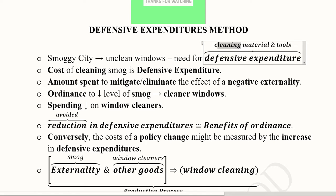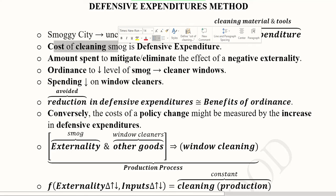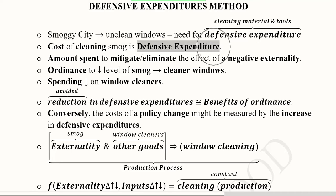In other words, we will have to clean those windows and that will require purchase and possession of some materials and tools that will allow us to clean the windows. So that's a cost that has to be faced by the people in smoggy cities. Now the cost of cleaning the smog is called the defensive expenditure.